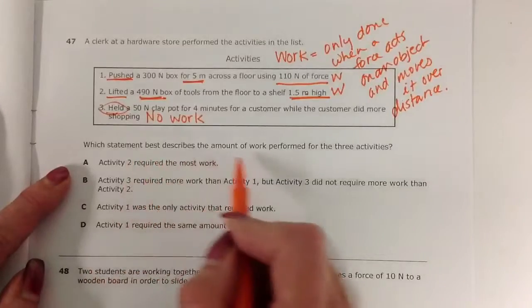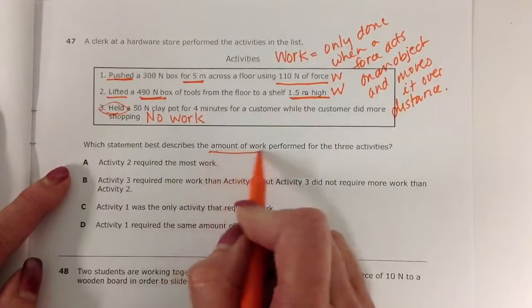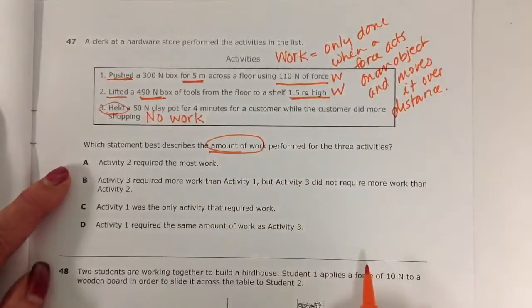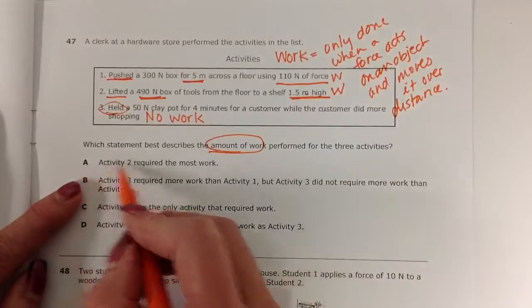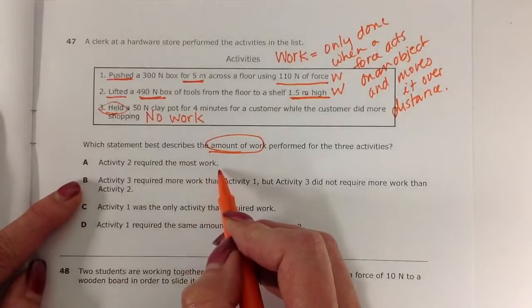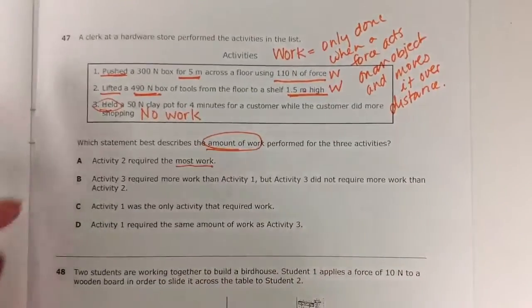It says, which statement best describes the amount of work performed for the three activities? We want to know how much work was being done here. We already eliminated three—there's none. Activity two required the most work? Well, in order to know who required the most work, I need to calculate the work.